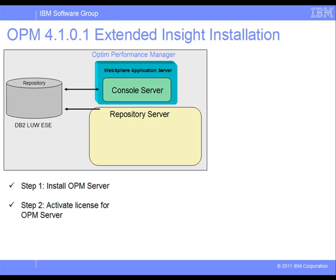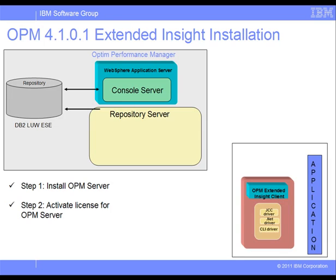The Optum Performance Manager Extended Insight feature contains a server component and a client component. The Extended Insight client component is collocated with the database applications that access the monitored DB2 database. Depending on the application type, the Extended Insight client hooks into JCC, .NET, or DB2 call level interface drivers, intercepts database traffic for the monitored database, and collects response time data about transactions and SQL statements.